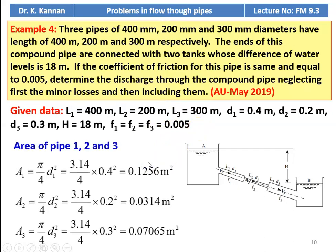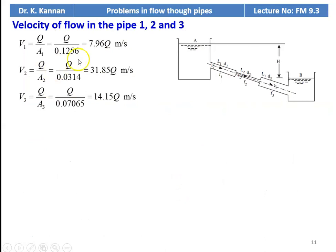Areas: A1 = π/4 × 0.4² = 0.1256 m²; A2 = π/4 × 0.2² = 0.0314 m²; A3 = π/4 × 0.3² = 0.07065 m². Velocities: V1 = Q/A1 = 7.96Q m/s; V2 = Q/A2 = 31.85Q m/s; V3 = Q/A3 = 14.15Q m/s.